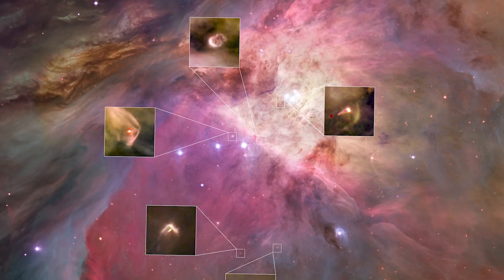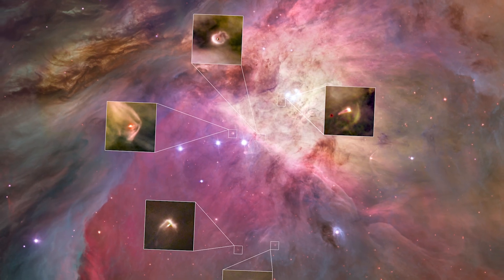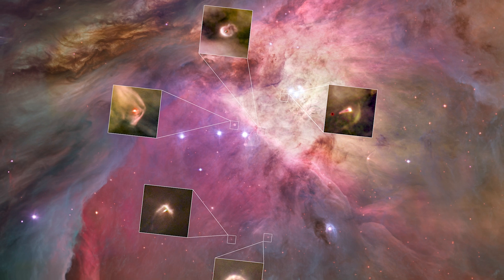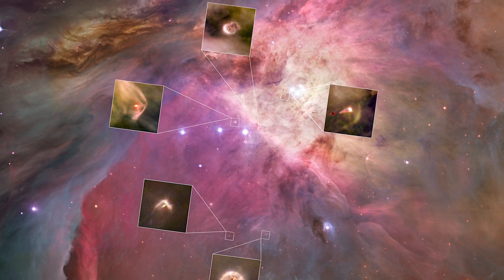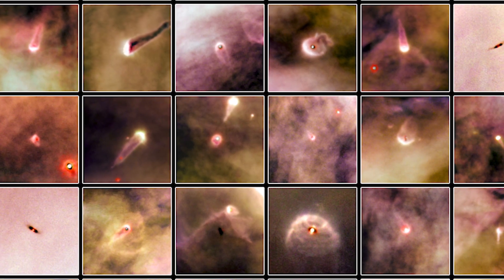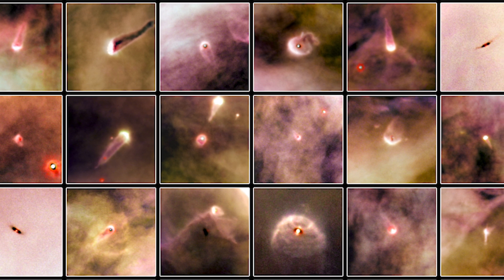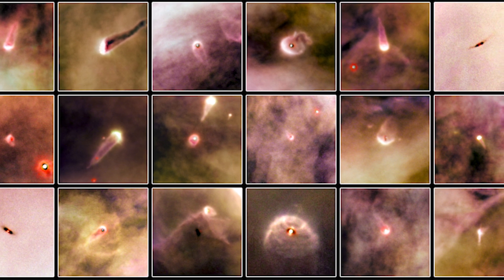What we're looking at here is one of the first images that Hubble took trying to answer the question of how common is planet formation. There are 30 objects in the Orion star-forming region, which has lots of stars in formation — young systems. Each one of these is an example of material around a young star that looks to be forming a planetary system.